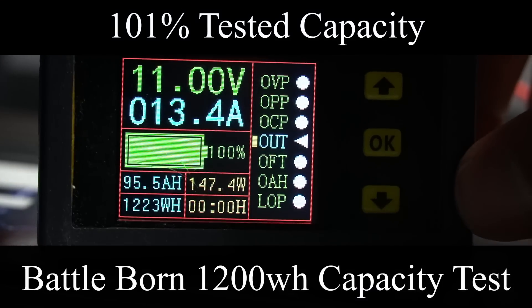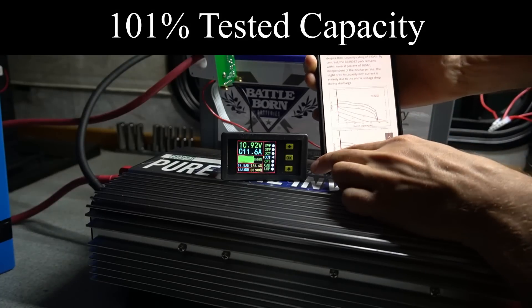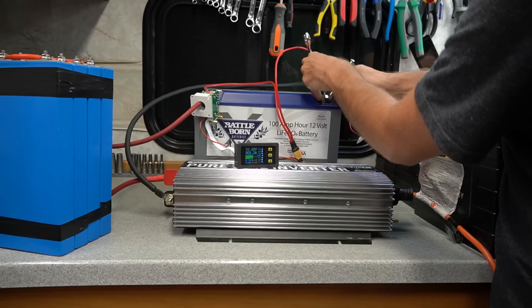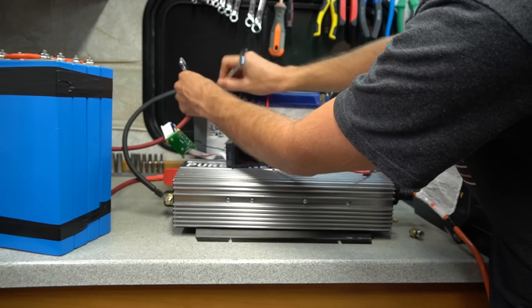We got 1,223 watt hours. That's awesome. That is the exact same result that they have on their website and on the data sheet. Now it's time to test the next battery. I'm just happy that we got the same results as the data sheet. I mean that's perfect.